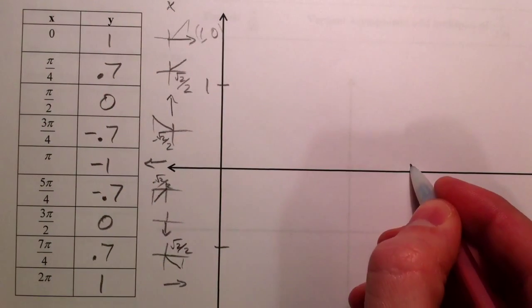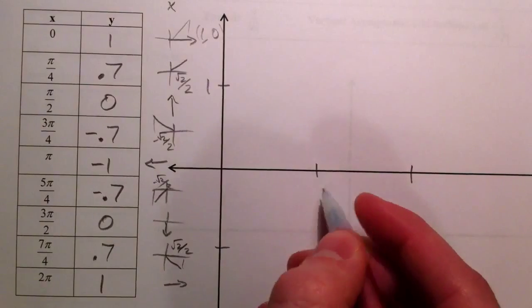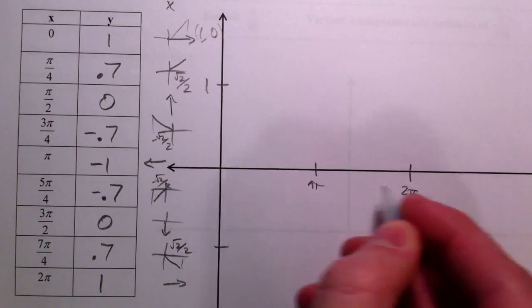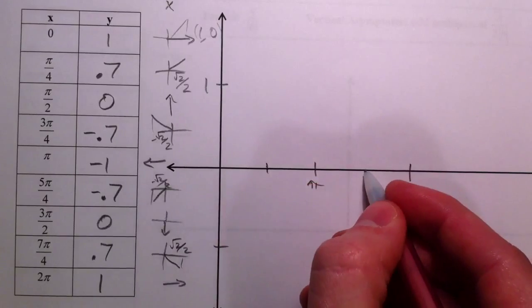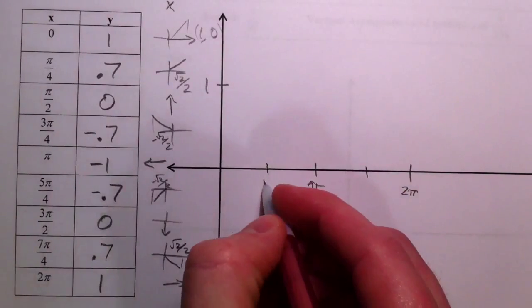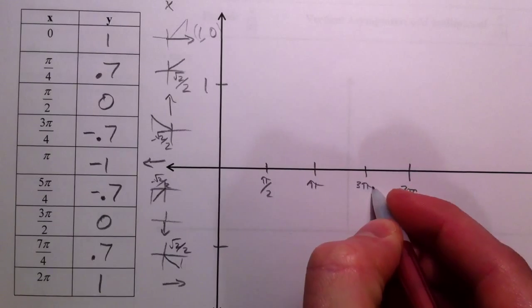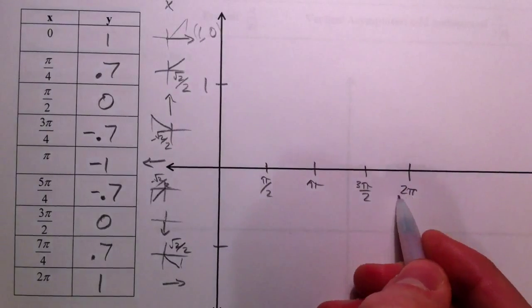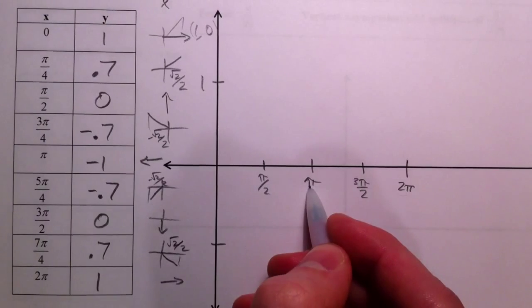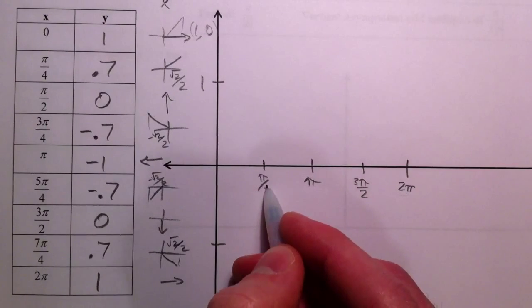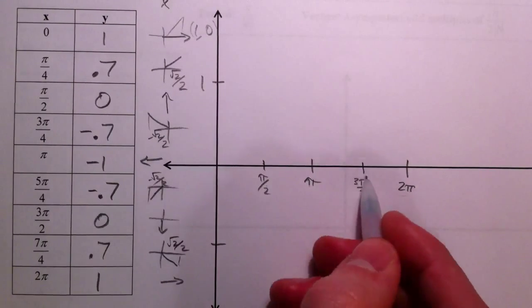So I'm going to go 0 to 2 pi again. This is pi, this is 2 pi. Labeling our axis is going to be very important when we're doing this stuff. Pi over 2. Notice that you can start with 2 pi, cut that in half, cut it in half again, and then you have 1, 2, 3 of those. So 3 pi over 2.